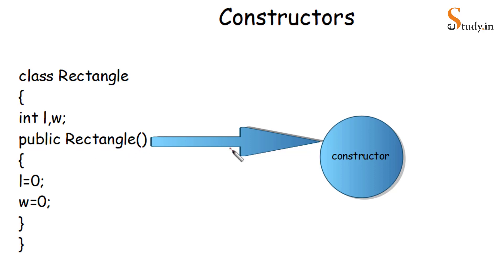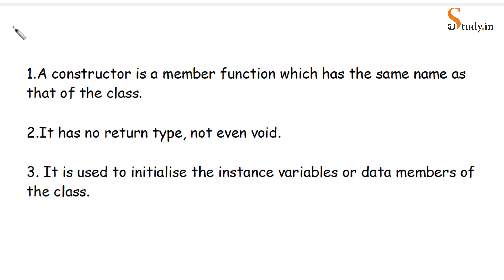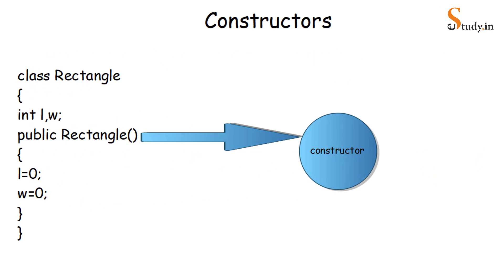So we have understood what is a constructor. Let us go through the points again: a constructor is a member function which has the same name as that of a class, it has no return type — not even void — and it is used to initialize the instance variables or data members of the class. The instance variables or data members are l and w. In the constructor, we have given an initial value of 0 to both l and w.